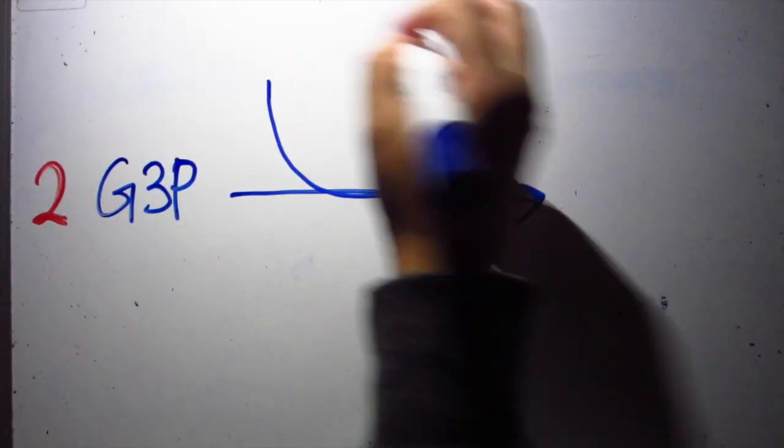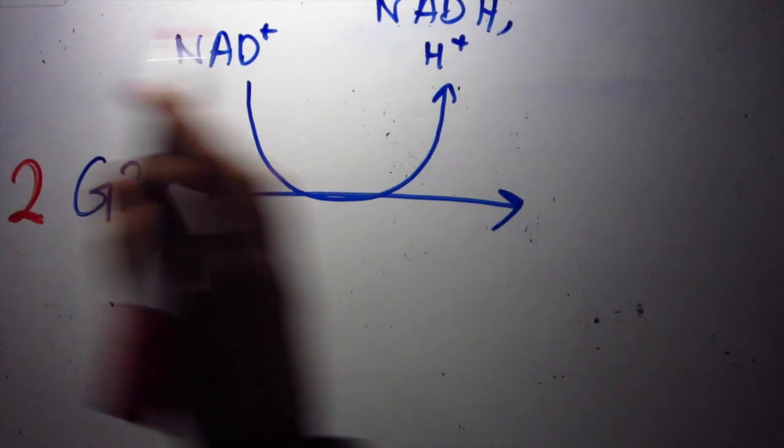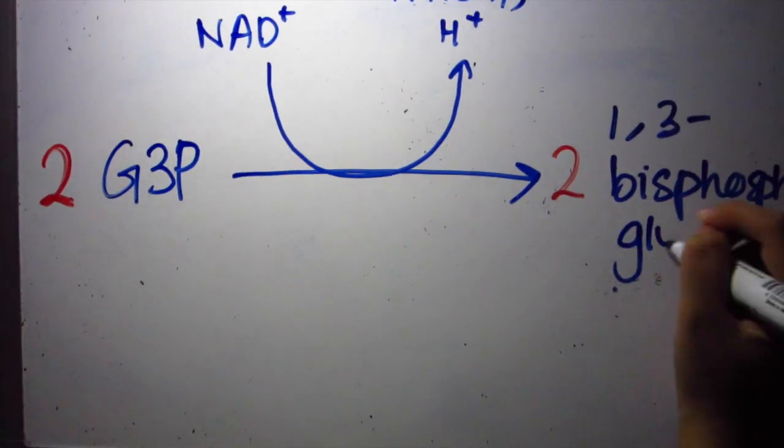G3P undergoes oxidation while NAD plus is reduced. We will get 1,3-bisphosphoglycerate.